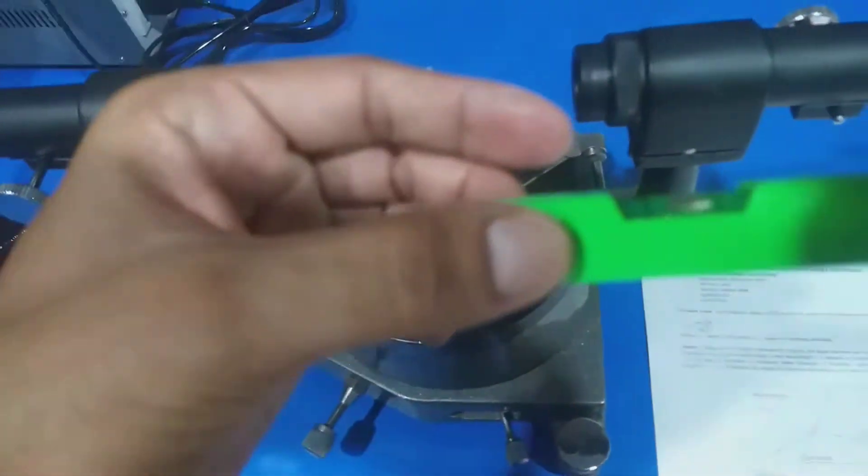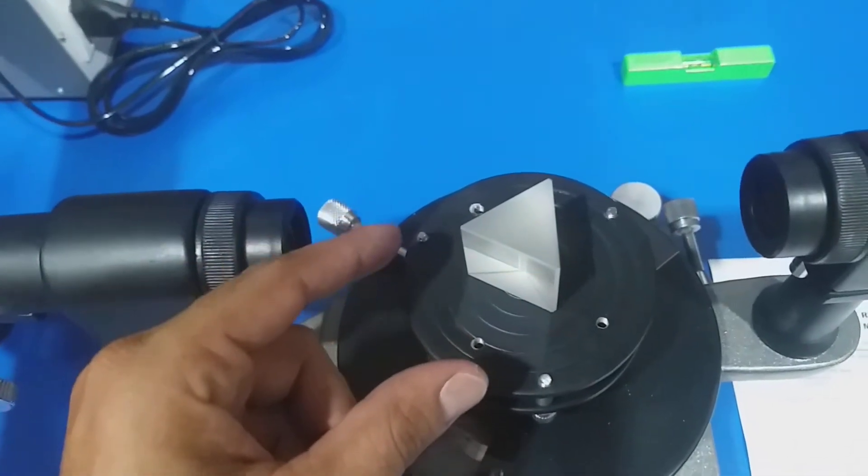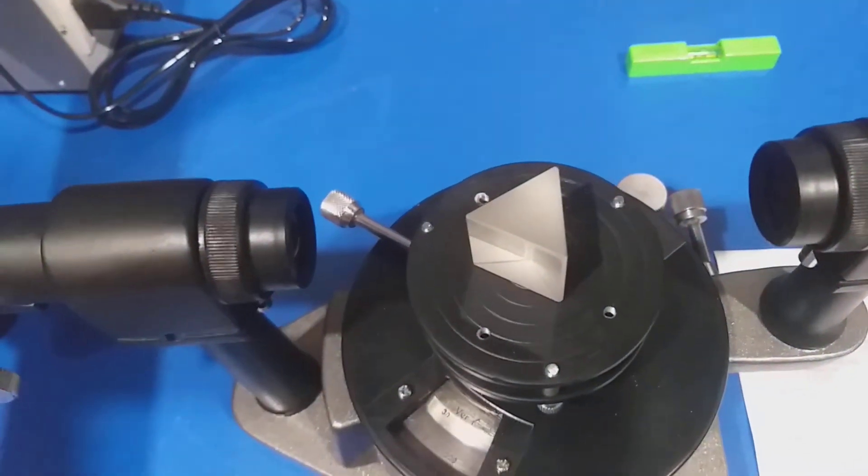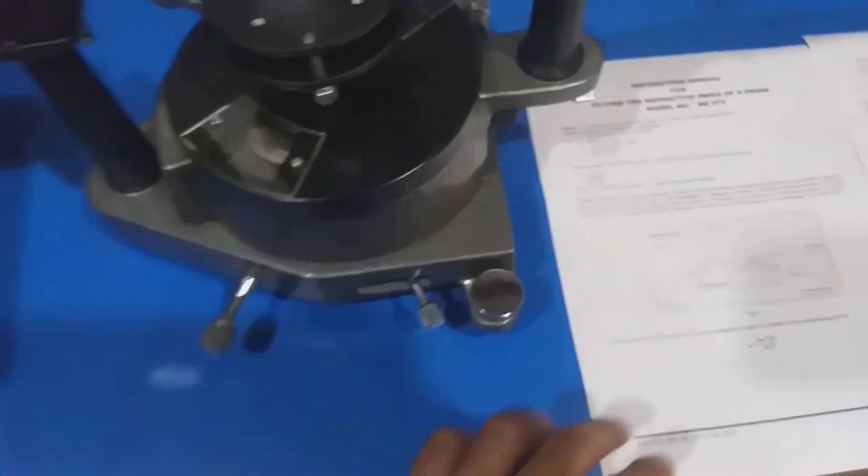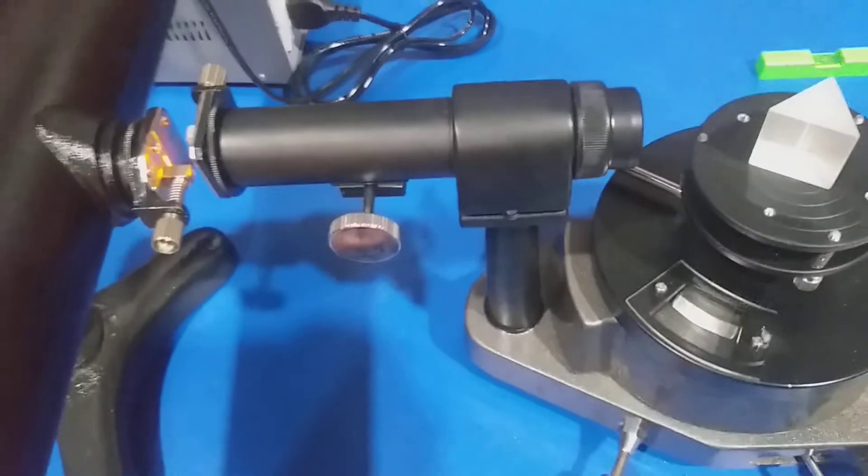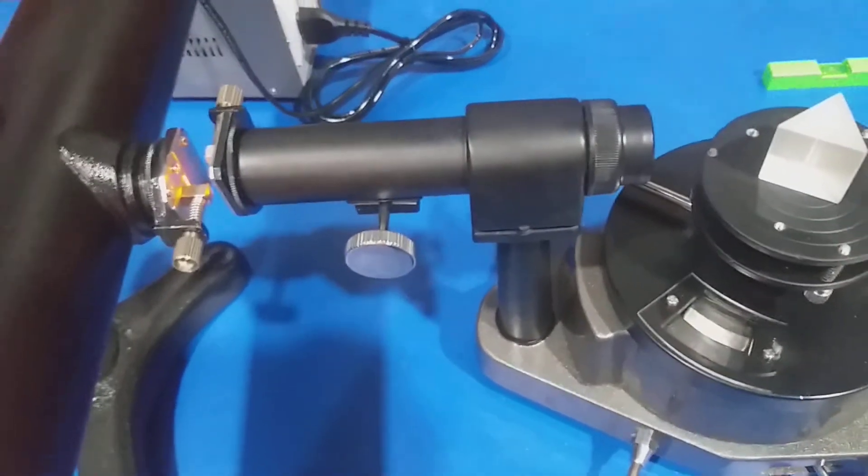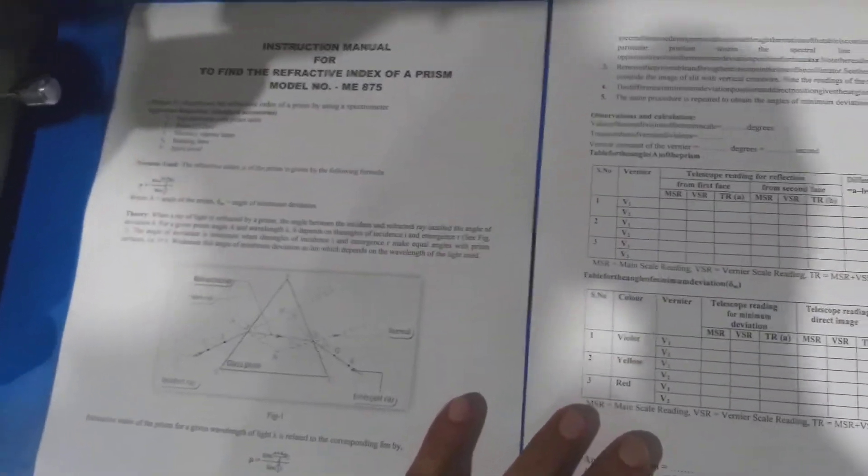In order to perform this experiment, first we set the collimator and eyepiece in order to obtain a well-defined slit of light. Now we calculate the angle of prism.